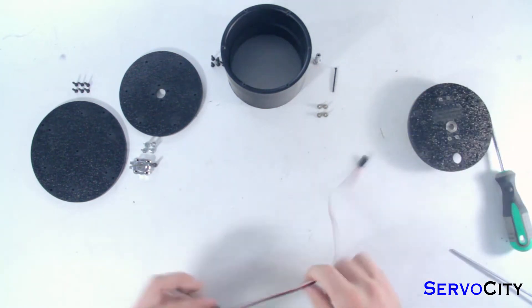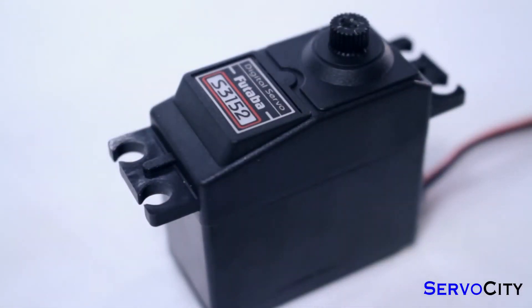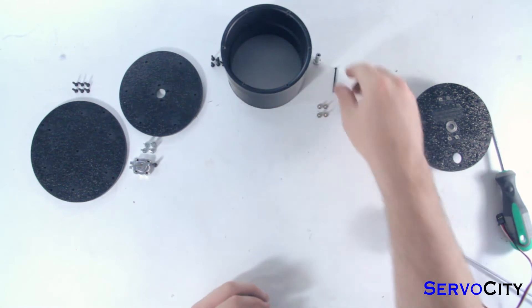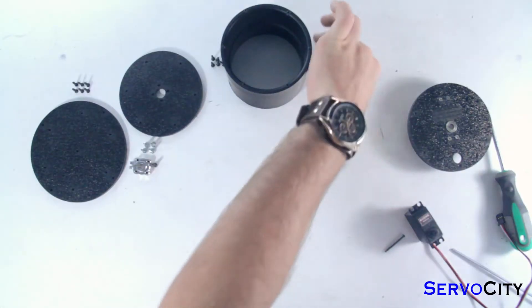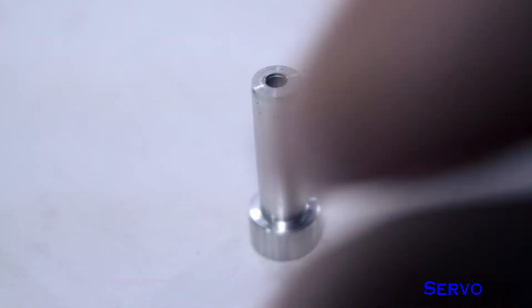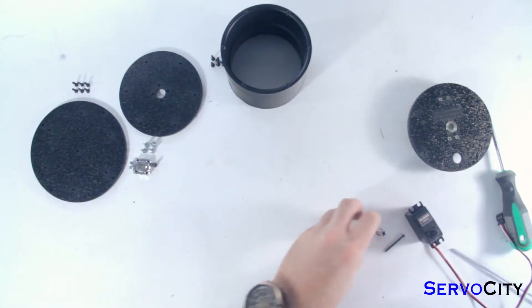For this project we're using the Futaba S3152 servo, a 2.6 x 30 mm servo screw, a servo shaft horn, and four 4-40 x 1/4 inch truss head screws.